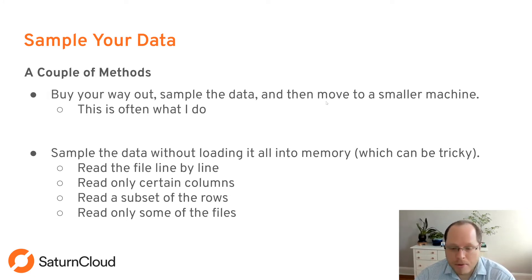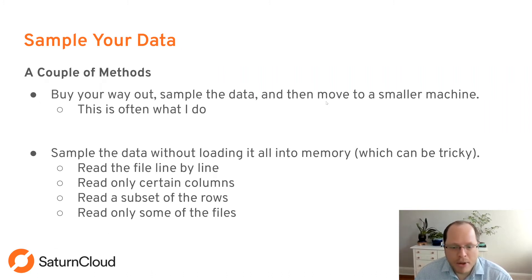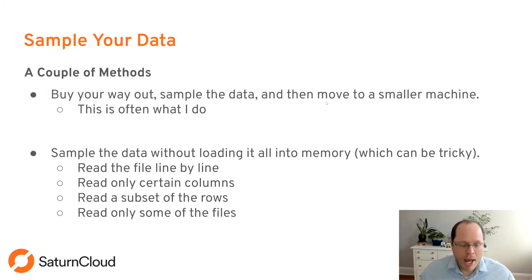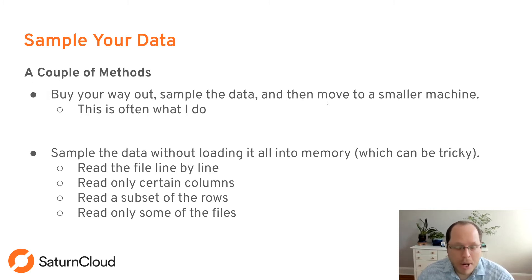You're typically only using that larger system for about 15 minutes while sampling, then move to the smaller machine for the rest. You can also sample without loading everything into memory, though you need to be careful — what you think isn't loading into memory sometimes actually does. Methods include reading data line by line, reading only certain columns, reading a subset of rows using random indices, or if you have a list of files, reading only some of the files.